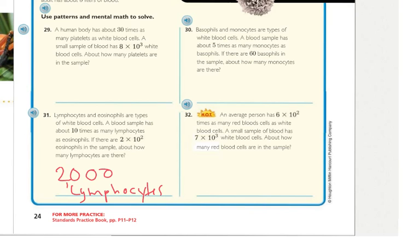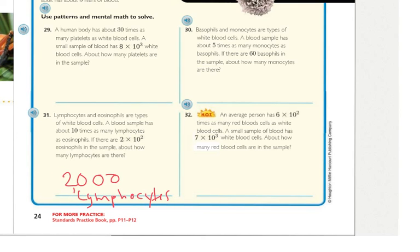An average person has 6 times the 2nd power of 10 times as many red blood cells as white blood cells. A small sample of blood has 7 times the 3rd power of 10 white blood cells. About how many red blood cells are there in the sample? Well, 6 times 7 is 42. And I have the 2nd power of 10 and the 3rd power of 10. So this one gives me 3 zeros and that one gives me 2 zeros, so altogether I'm going to have 5 zeros — 1, 2, 3, 4, 5. So I have 4,200,000 red blood cells.